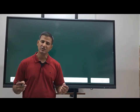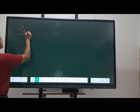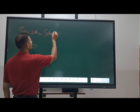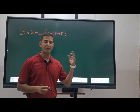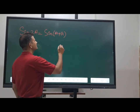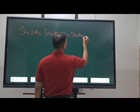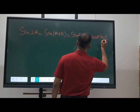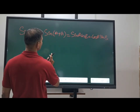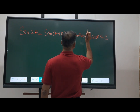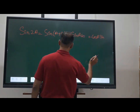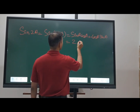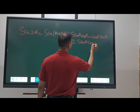Now let us see sin 2A, cos 2A, and tan 2A. Sin 2A can be written as sin(A+A). Using the formula sin(A+B) = sin A cos B + cos A sin B, replacing B with A gives sin A cos A + cos A sin A, which becomes 2 sin A cos A.